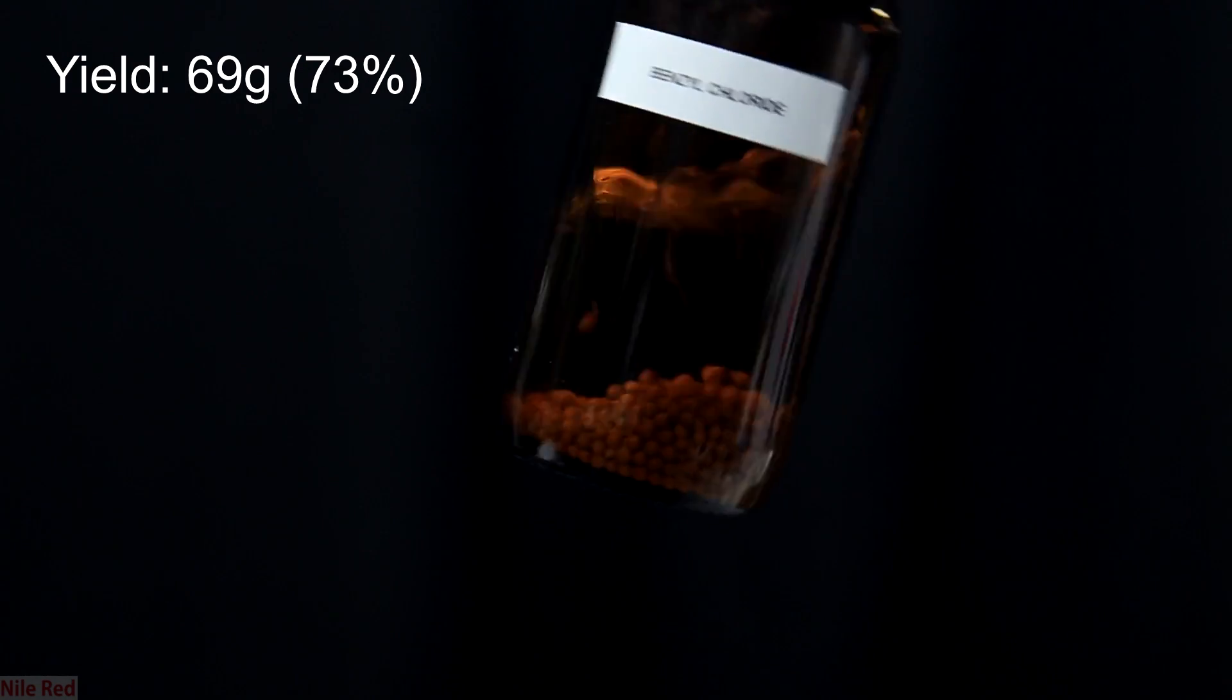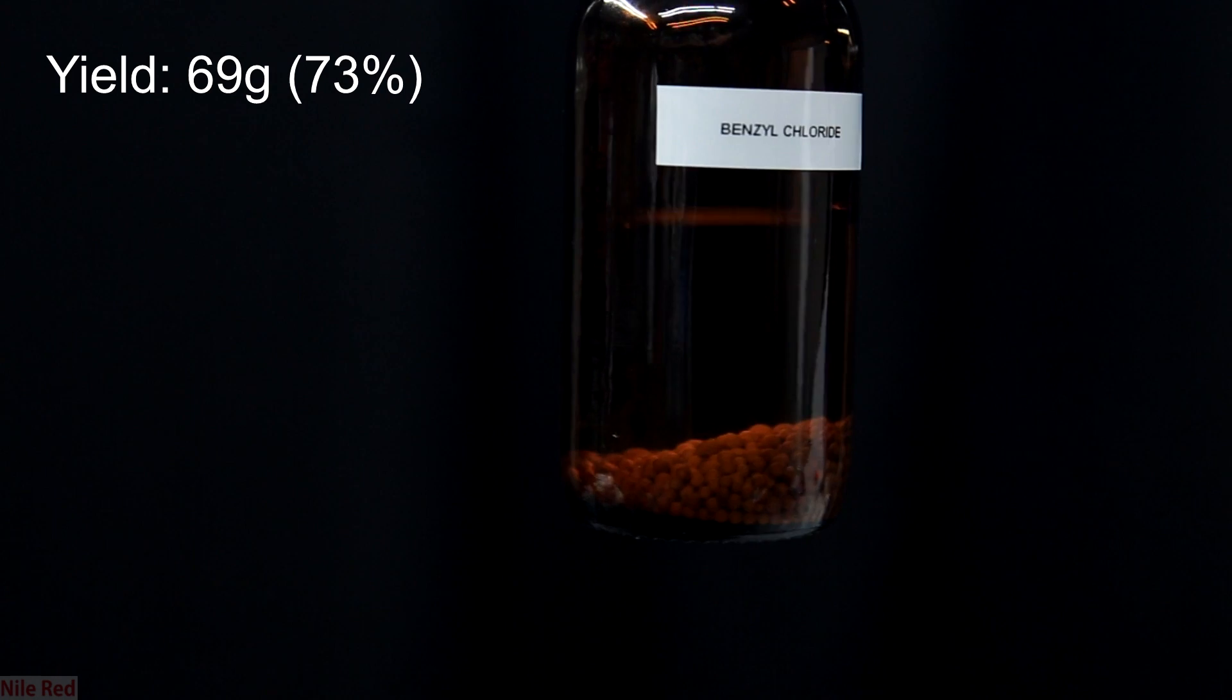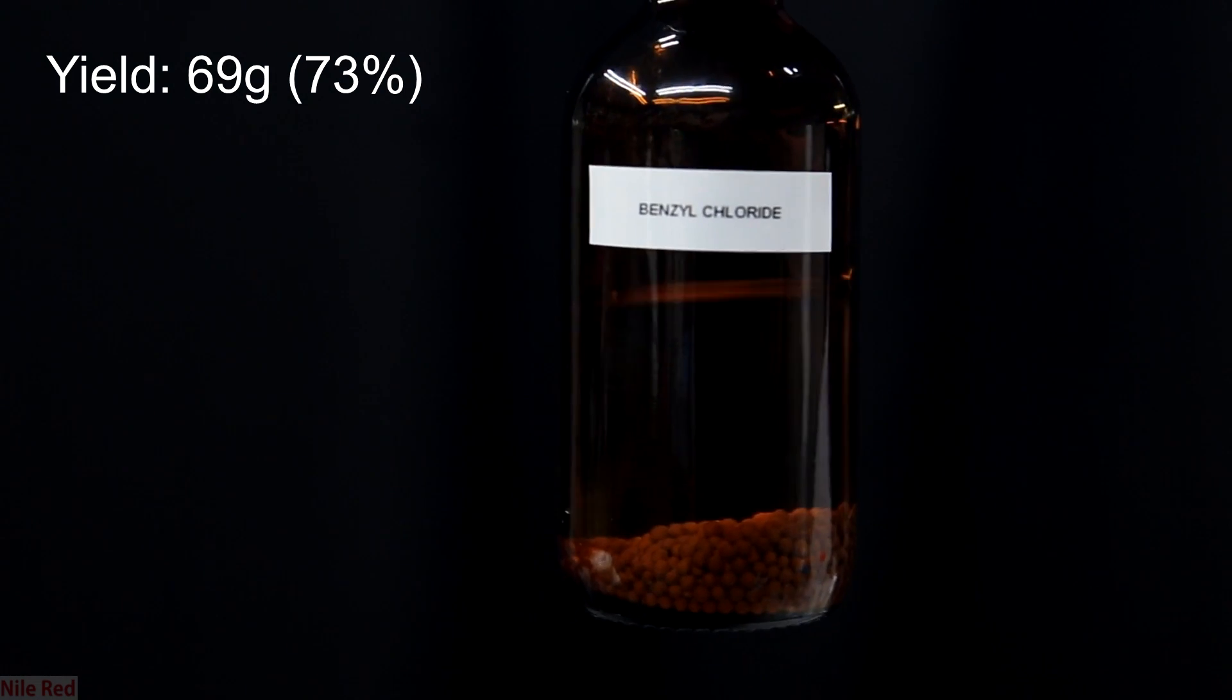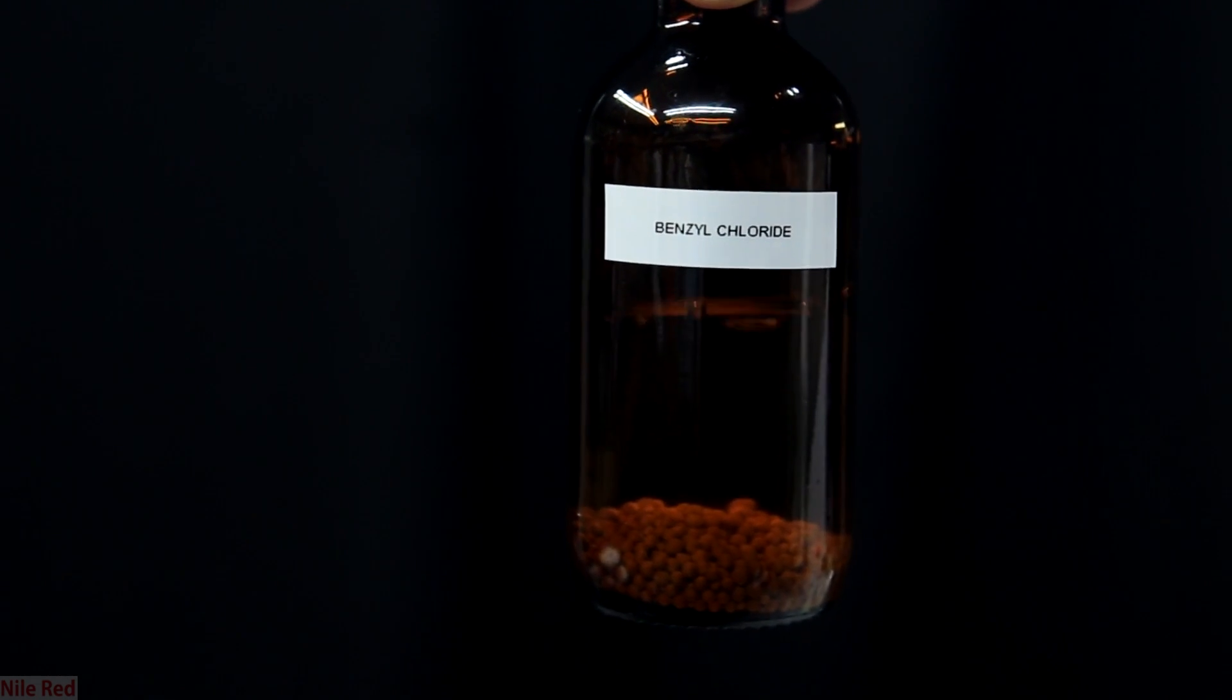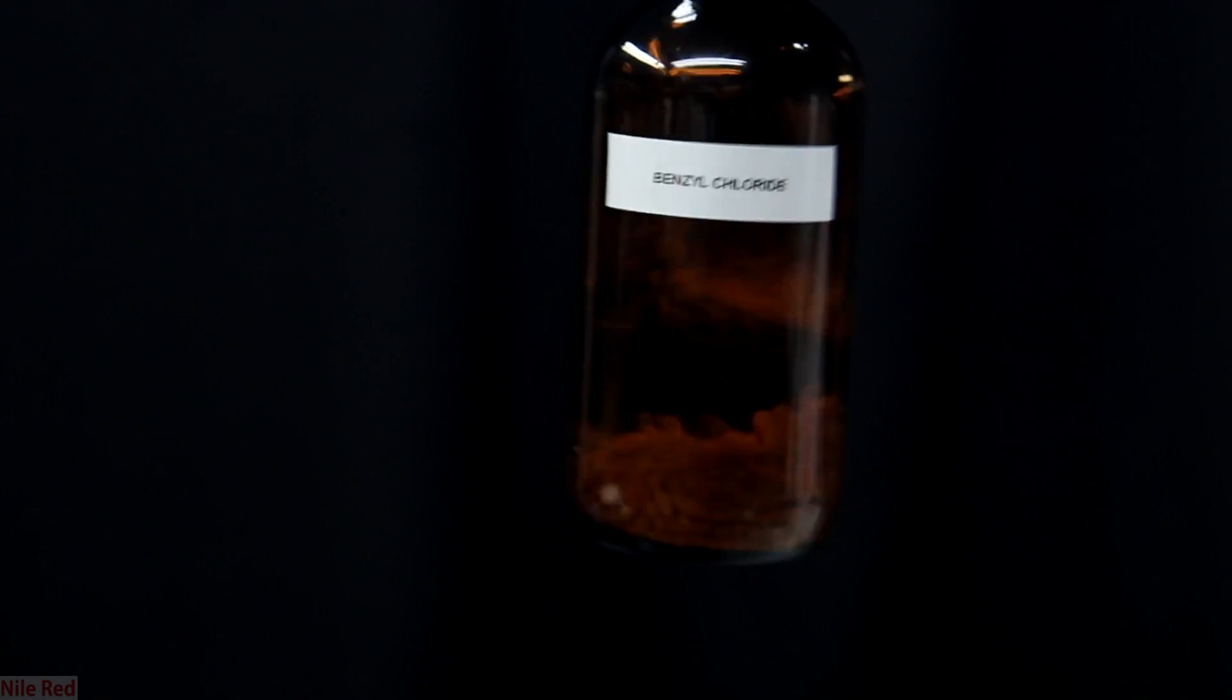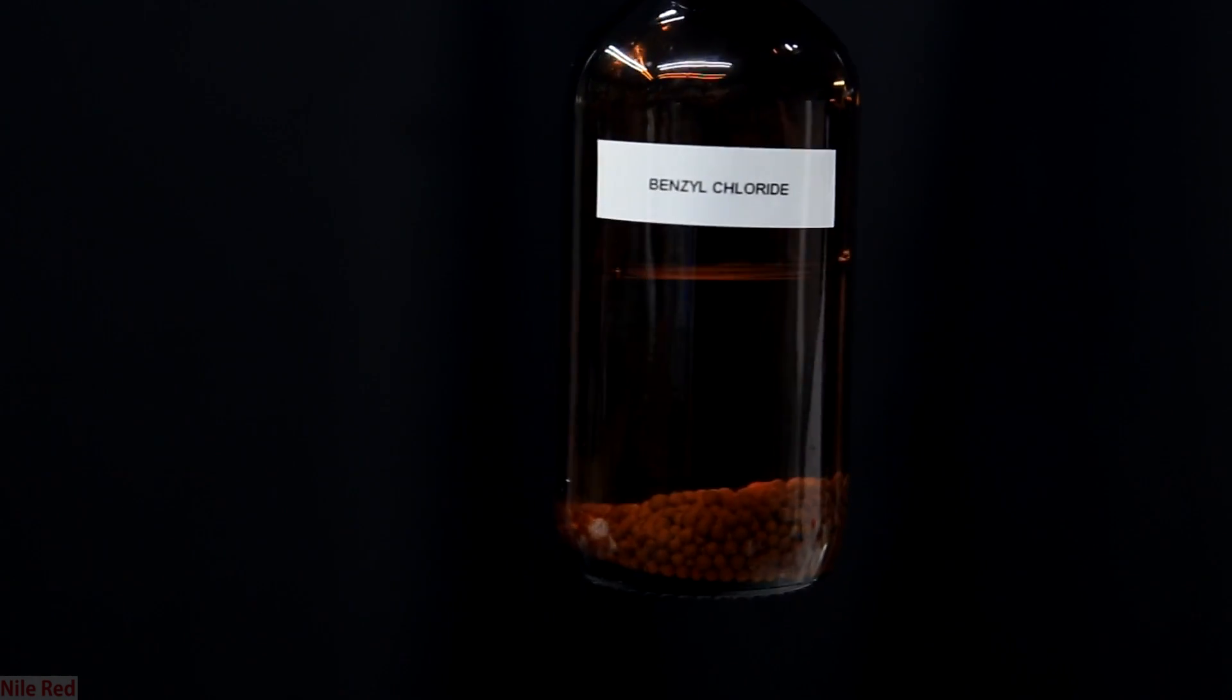So in the end the final yield was 69 grams of benzyl chloride. This corresponds to a yield of about 73% which is pretty much expected. As I said before I'll be using the benzyl chloride to make denatonium benzoate and I'll post this in a future video. I already filmed it but I filmed it with my new camera and I'm trying to get all of the footage that I filmed with my old camera out first.